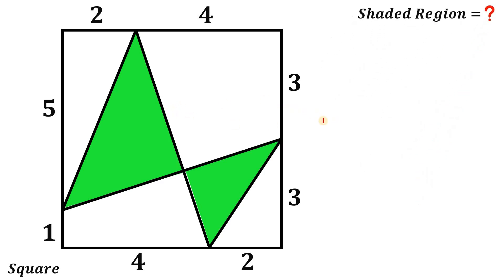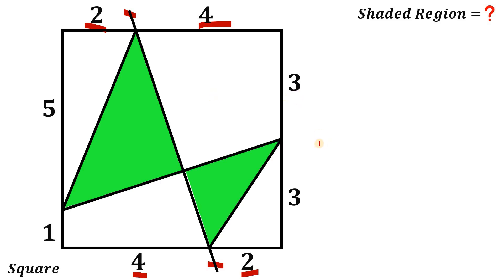All right. To answer this kind of question, we're going to focus on this segment. This segment divides the area of the square into two equal parts. Why is that? Because this square cuts into two trapezoids with bases of two and four and the same height of six. So we divide the square into two equal parts. We know the area of this square is 36 because three plus three is six, and six squared is 36. So the area of each half is 18.